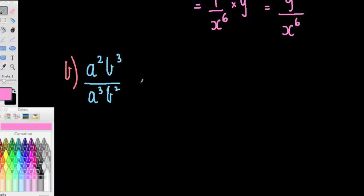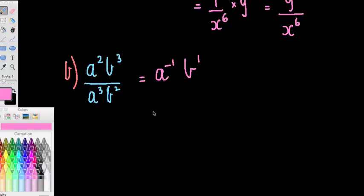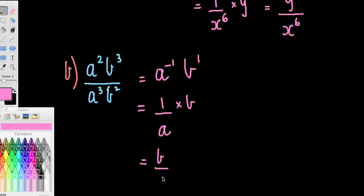For this one, remember when we're dividing we subtract the indices. Concentrating on a: a to the 2 over a to the 3, so 2 minus 3 is negative 1. For b: b cubed over b squared is b to the power of 3 minus 2, which is b to the 1. So this becomes 1 over a multiplied by b, which equals b over a.